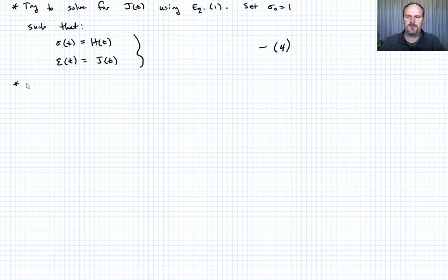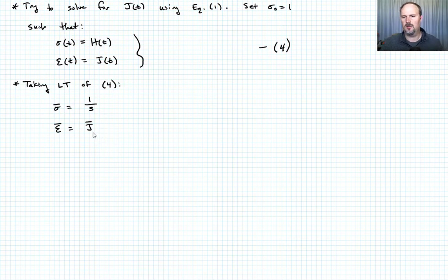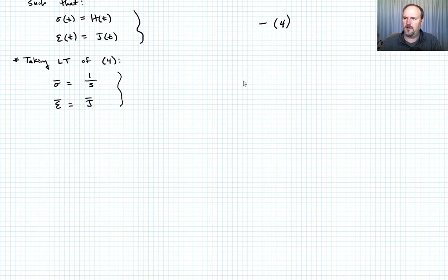Let's go ahead and take the Laplace transform of equation four. Taking the Laplace transform, sigma bar — the Laplace transform of the Heaviside function — is just one over S. The Laplace transform of epsilon, epsilon bar, is equal to J bar. Let's collectively call that equation five.